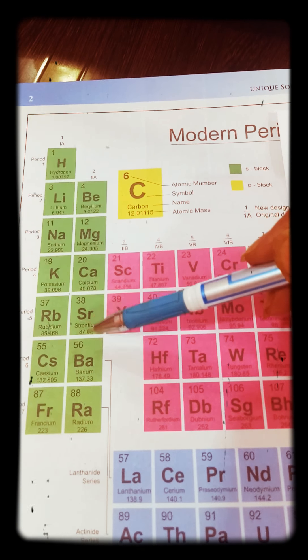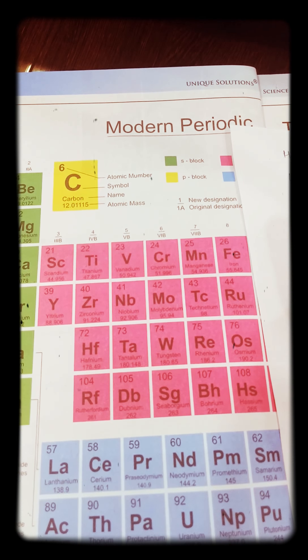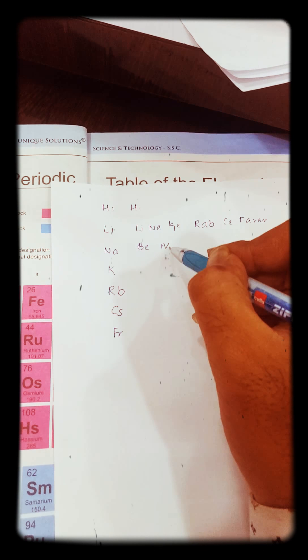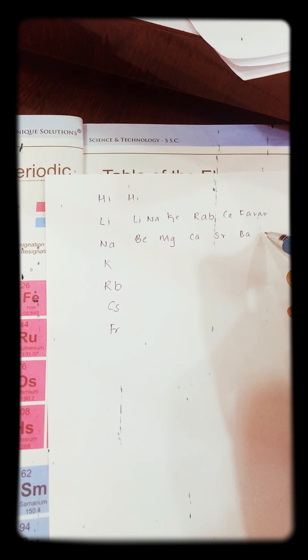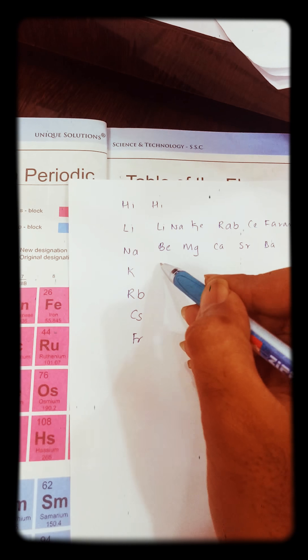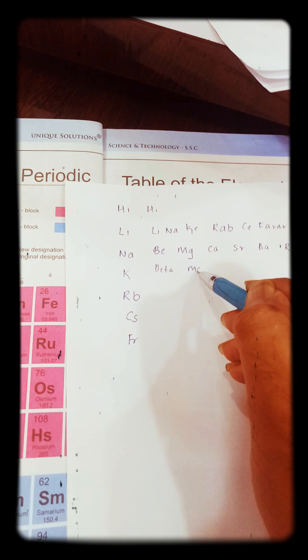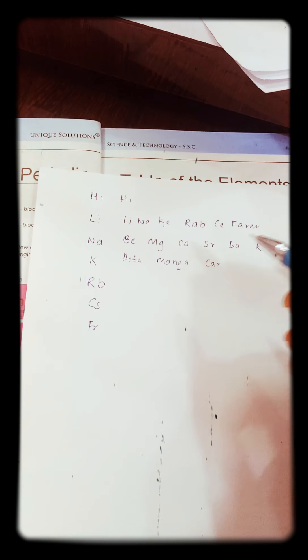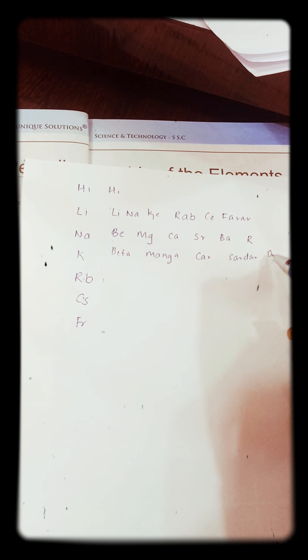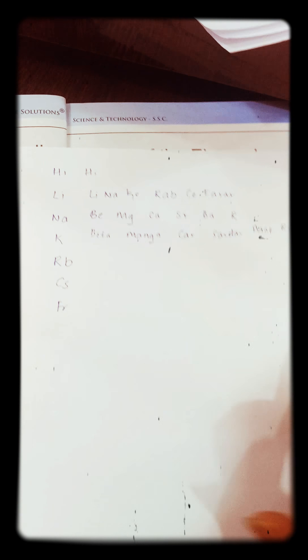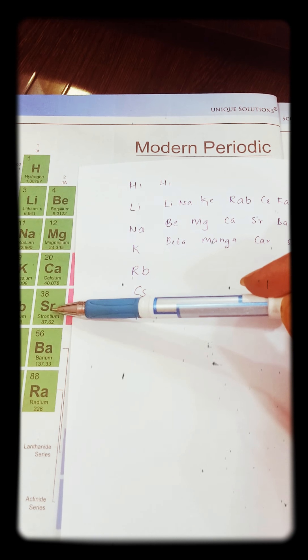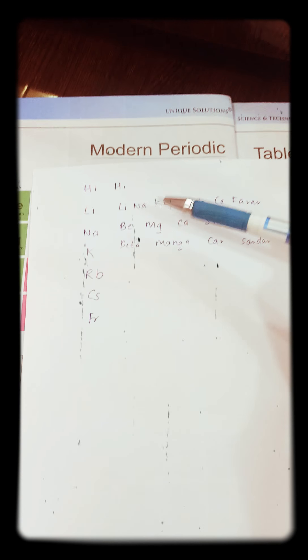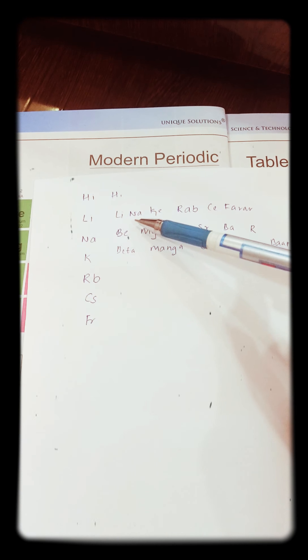And that is Beta Manga Car Sardar Bab Razi. So here you can come: Beta Manga Car Sardar Bab Razi. So that you can just remember the shortcuts, so that you can remember the names of the elements. Beryllium, Magnesium, Calcium - Beta, Mangakar, Sardar, Bap, Razi - Strontium, Barium, Radium.